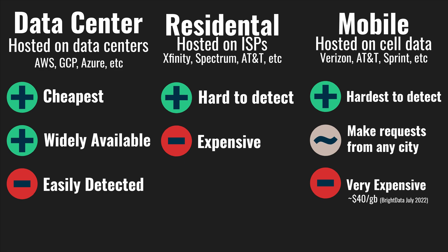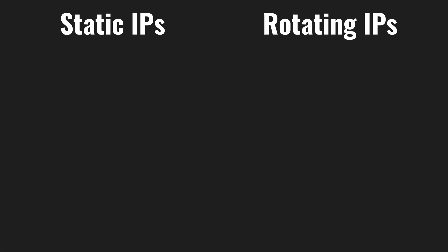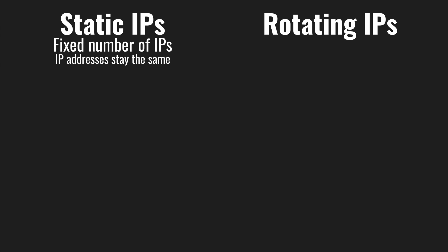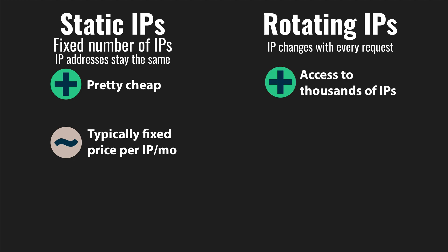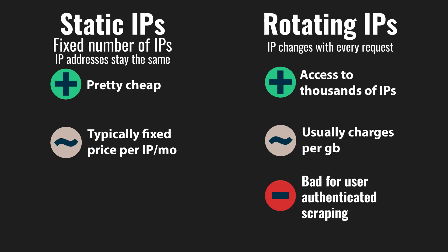Bright Data in July 2022 was charging $40 per gigabyte for their mobile proxies. In addition to these types, companies also typically offer two types of proxy pools: static IPs and rotating IPs. With static IPs, you get a fixed number of IPs that do not change, usually at a fixed price per IP per month. With rotating IPs, the proxy's IP typically changes with every request, giving you potentially access to thousands of IPs and preventing any realistic rate limiting. However, rotating proxies are priced per gigabyte rather than a fixed monthly fee. The main disadvantage is if you need to log in as a user, making requests from hundreds of different IPs is easily detectable as a bot. The type of proxy you should use is highly dependent on the website you're targeting — experiment to find the cheapest type that works most reliably.